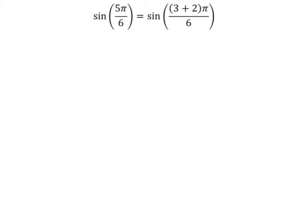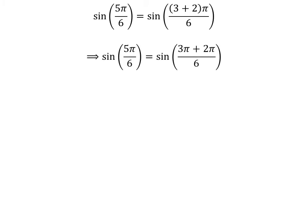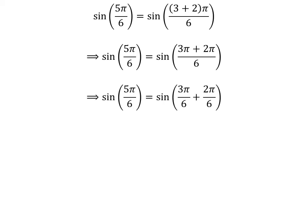Here is the explanation of the first method. We know 5 is equal to 3 plus 2, so sine of 5 times pi upon 6 is equal to sine of 3 plus 2 times pi upon 6. Expanding the numerator, we get sine of 3 times pi plus 2 times pi upon 6. The fraction 5 times pi upon 6 can be expressed as the sum of two fractions: 3 times pi upon 6 and 2 times pi upon 6. Cancelling out the common factor gives us sine of 5 times pi upon 6 is equal to sine of pi upon 2 plus pi upon 3.